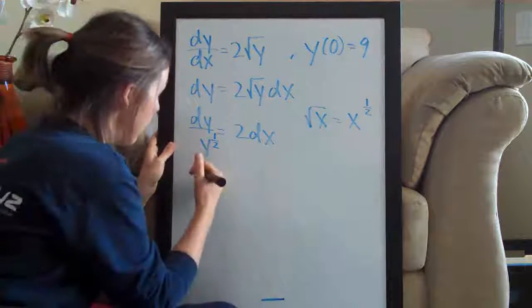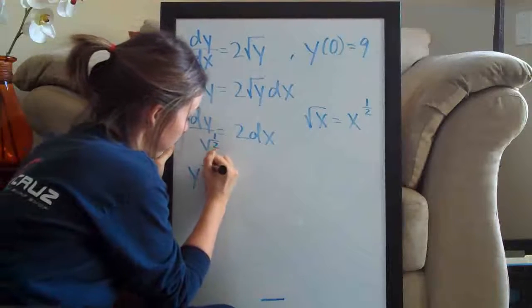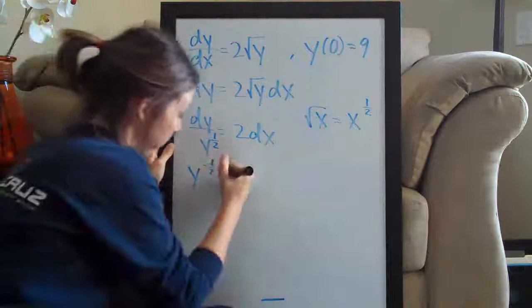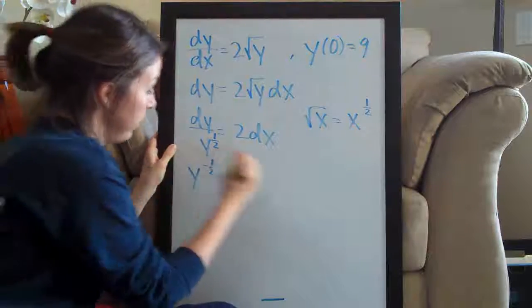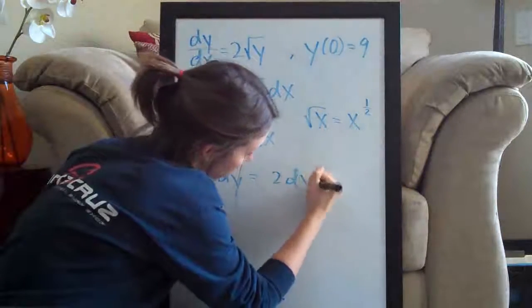If I want to move it to the top, then I just have to change it to a negative. So I have y to the negative one half dy—it's now in the numerator as opposed to the denominator—equals 2 dx.